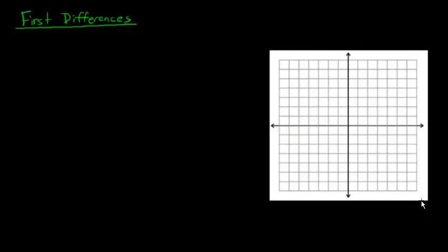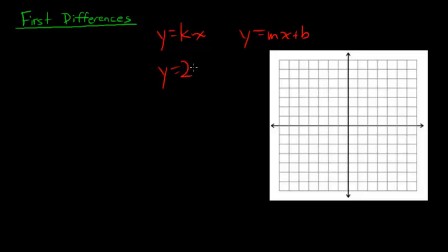Well, that's easy enough if you can look at the graph. What about if I just give you an equation? A linear equation will usually look something like this: y equals kx, or y equals mx plus b. Those are the two we've looked at. Usually k, m, and b have some sort of numbers — so y equals 2x, or y equals 3x minus 1, something like that. That will end up giving you a linear equation.